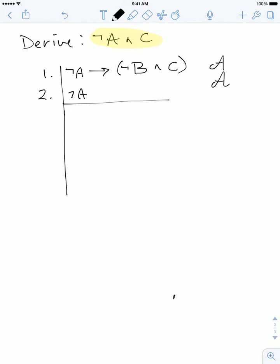So when the sentence we're trying to derive, in this case ¬A ∧ C, is not one of the components in our assumptions, we're going to need to use an introduction rule. We'll need the introduction rule to introduce the main logical connective of this sentence.